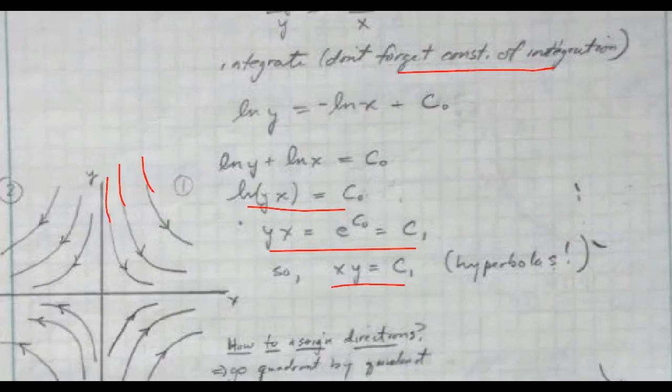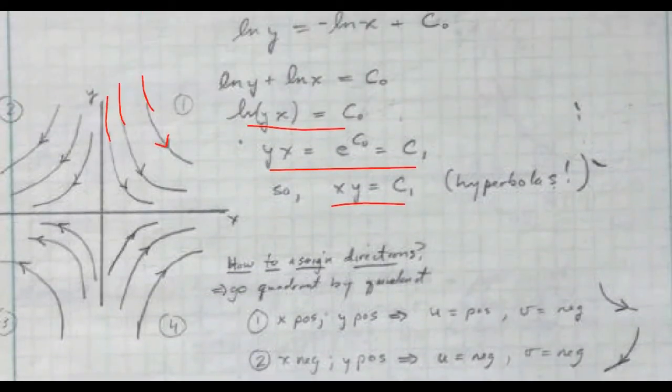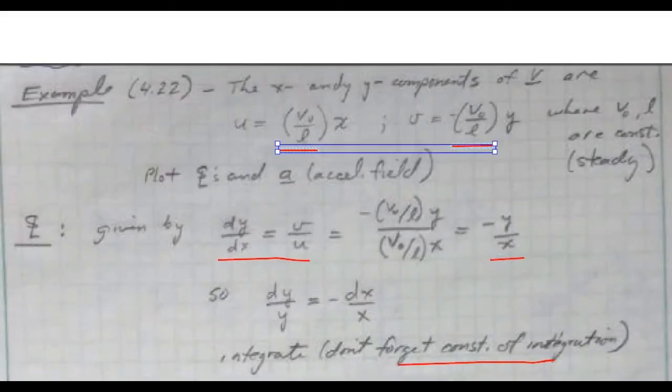So you can see these curves here going along in all four quadrants. So notice also that there are arrows on these curves, so how do you get these arrows, that's important to know.